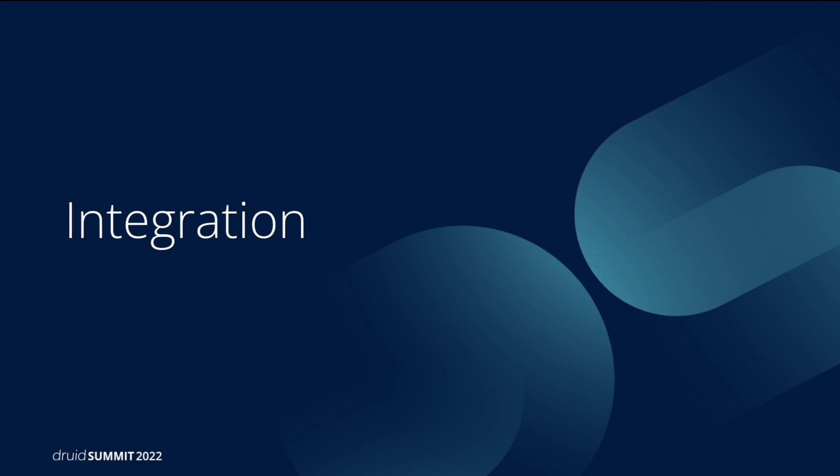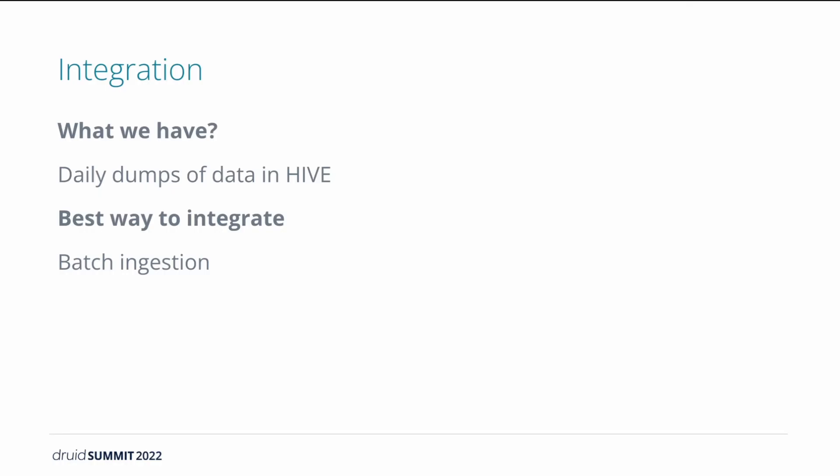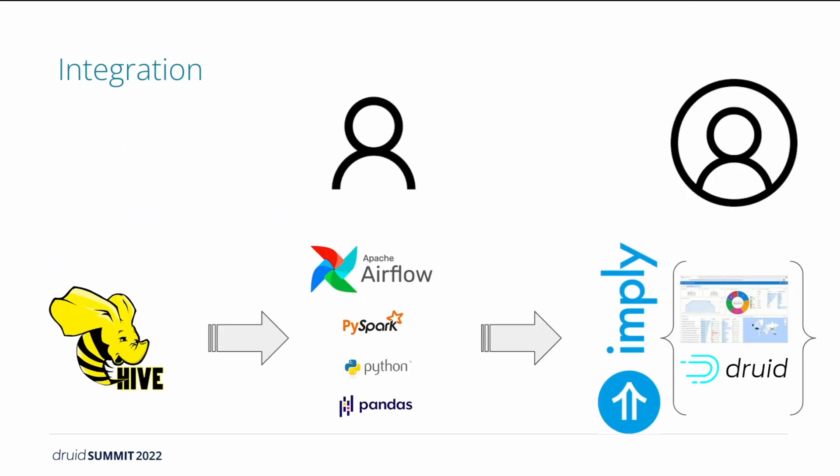We just saw how easy it was to get something up and running to play around with in Polaris. Now it's time to integrate and have our data automatically updated. In our case, we have our data exported in daily dumps in Hive. For the proof of concept, the most straightforward approach is to use daily batch ingestion.